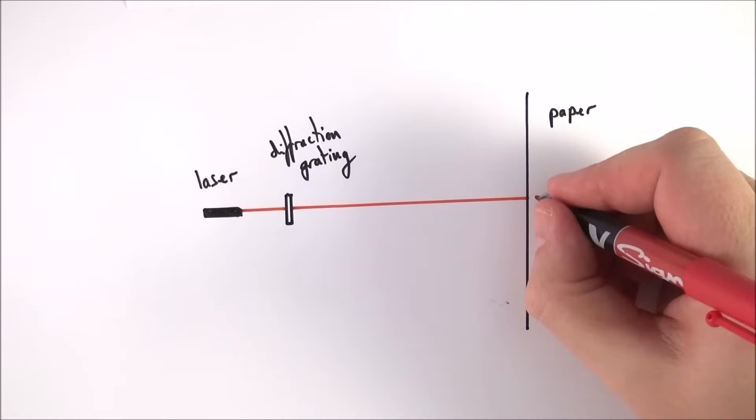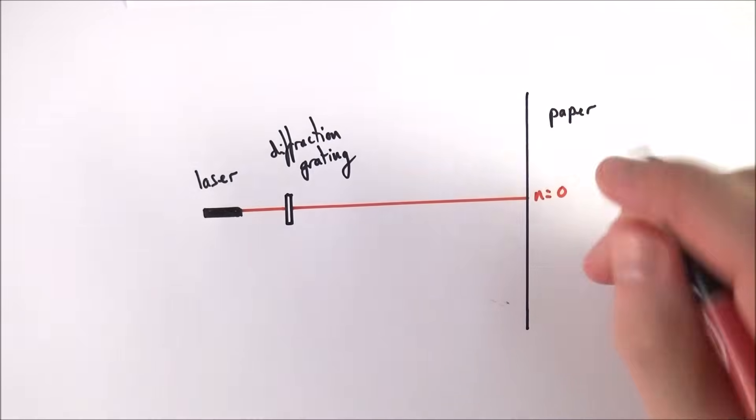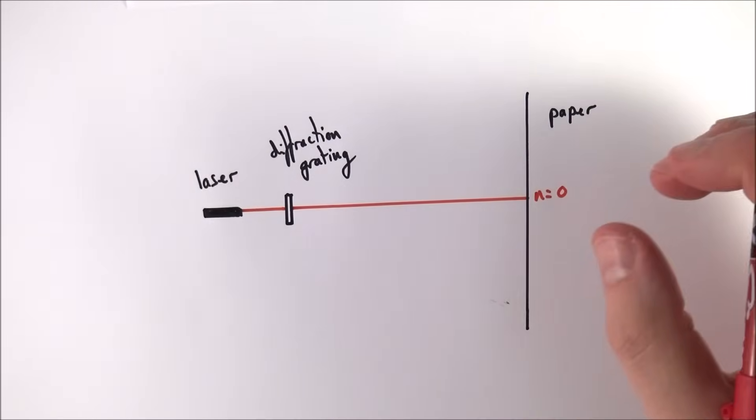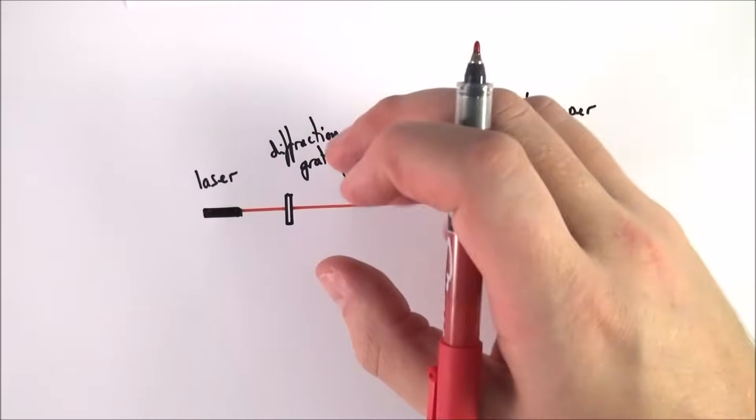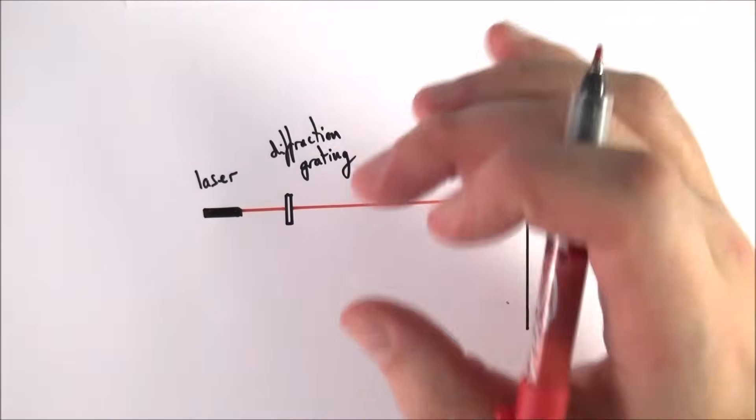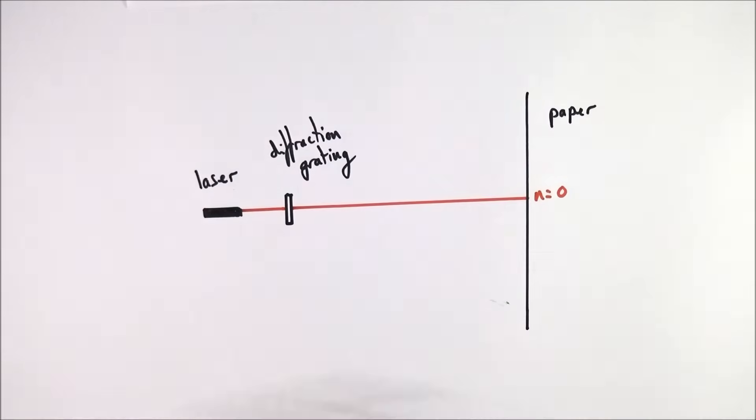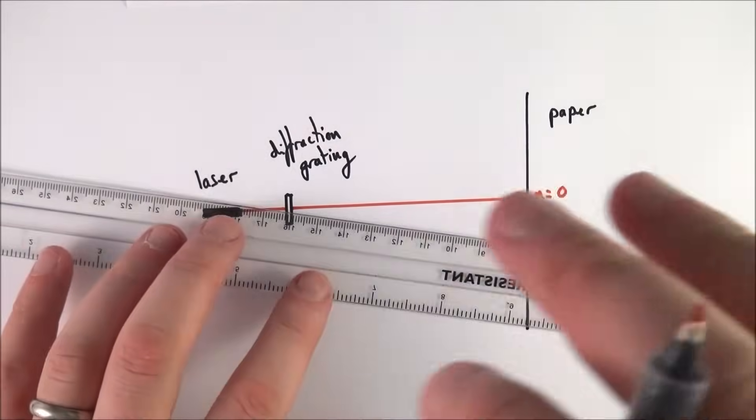I'm going to call it n equals zero. So you should be familiar with some of this theory, but as the light spreads out and it interferes with itself, we also get periods or parts where we have this constructive interference and also destructive interference.